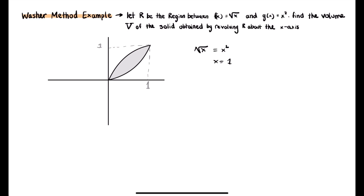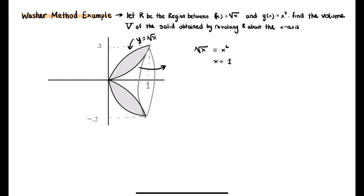We want to revolve this region around the x-axis. The top equation is y equals square root of x, and the inside function is y equals x squared. We are rotating around the x-axis. Using our washer method formula, v equals pi times the integral from a to b of f of x squared minus g of x squared dx, where the inside is g of x and the outside is f of x.